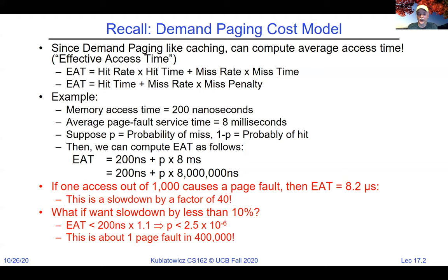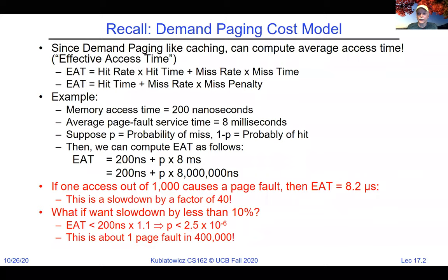We can ask: if we want the slowdown to be less than 10%, then what do we need for a page fault rate? We find it can't be any larger than one page fault in 400,000. This means we really have to be careful not to have a page fault if we can avoid it, which led us to considering our replacement policy as very important — to keep as much data that we need in the cache as possible.